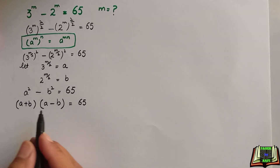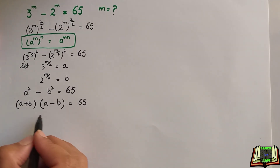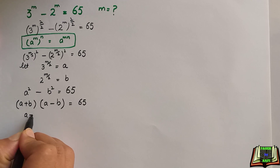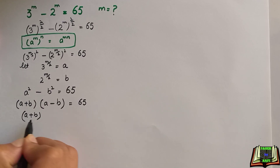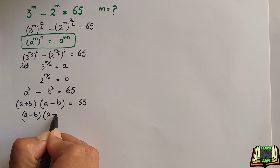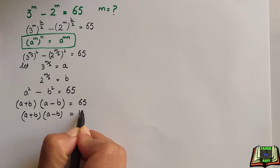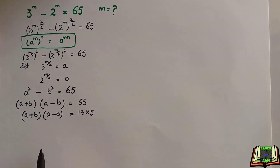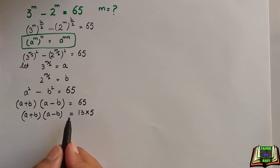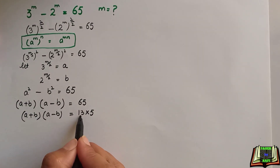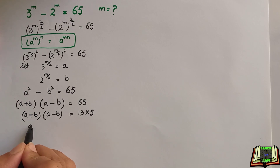We apply the difference of squares identity: a squared minus b squared equals a plus b times a minus b. We write 65 as 13 times 5, so we can say a plus b equals 13 and a minus b equals 5.